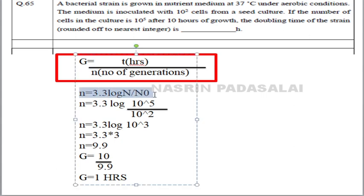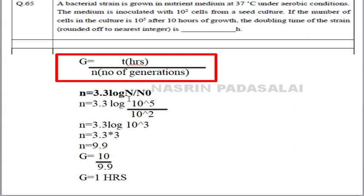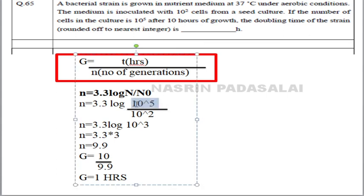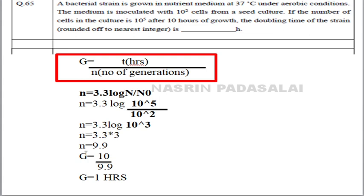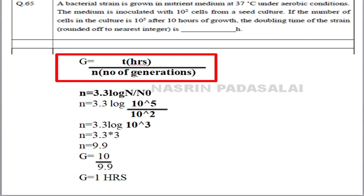The formula for N is: N = 3.3 × log(N_final / N_initial). Final cell count is 10⁵ and initial is 10². So 10⁵ / 10² = 10³, and log(10³) = 3. Therefore N = 3.3 × 3 = 9.9, approximately 10 generations. Applying G = T/N: 10 divided by 9.9 gives a doubling time of approximately 1 hour.